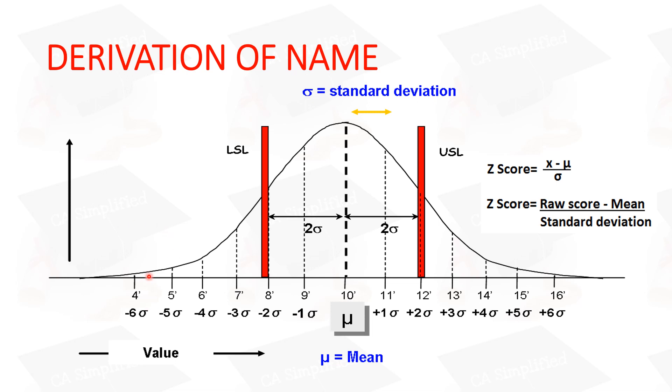So in the sixth area, you will take it to 6 sigma. Then you will move and stop there. In that case, you will have 99.9996% defect free product. The rest will be defective.